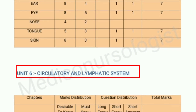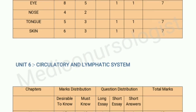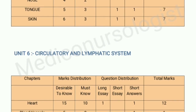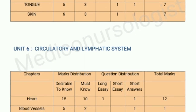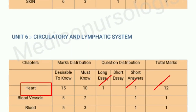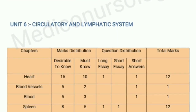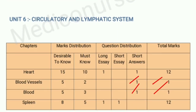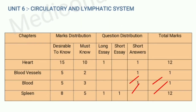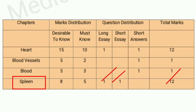Our sixth unit is the circulatory and lymphatic system, which has four chapters: heart, blood vessels, blood, and spleen. This is also the second most important unit. The heart chapter carries 12 marks — 1 question for 10 marks and 1 question for 2 marks. Blood vessels and blood chapters each carry 2 marks, while the spleen chapter carries 12 marks with 1 question possibly for 10 marks and 1 question for 5 marks.